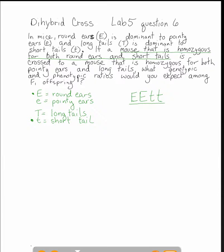Our second mouse is homozygous for both pointy ears and long tails. Pointy ears is the small e allele, so it's homozygous ee, and it's also homozygous for long tails, TT. That is our second mouse. When you cross these two mice, you have to make gametes from both that contain all combinations of the two different genes — the gene for ears and the gene for tails.